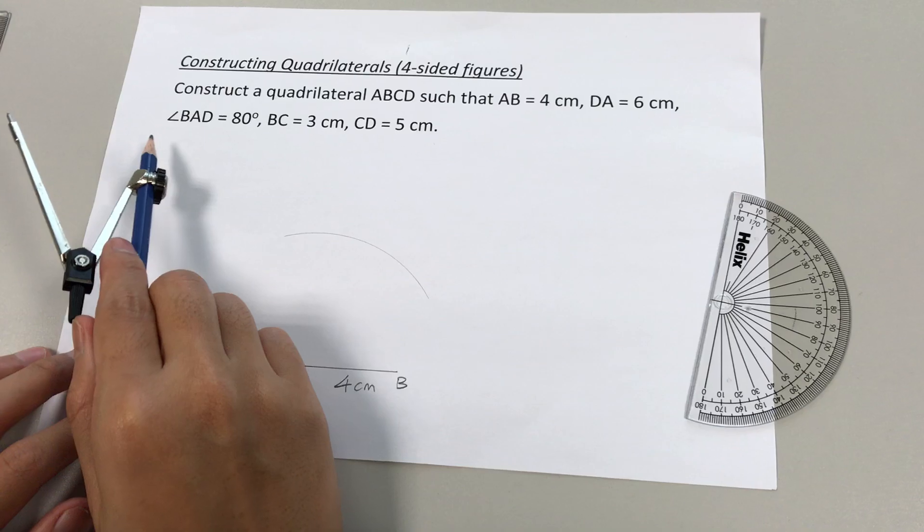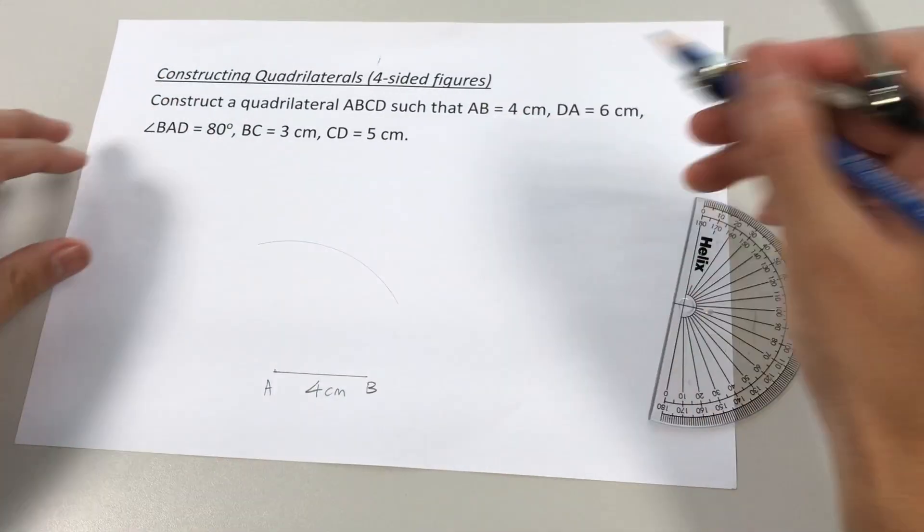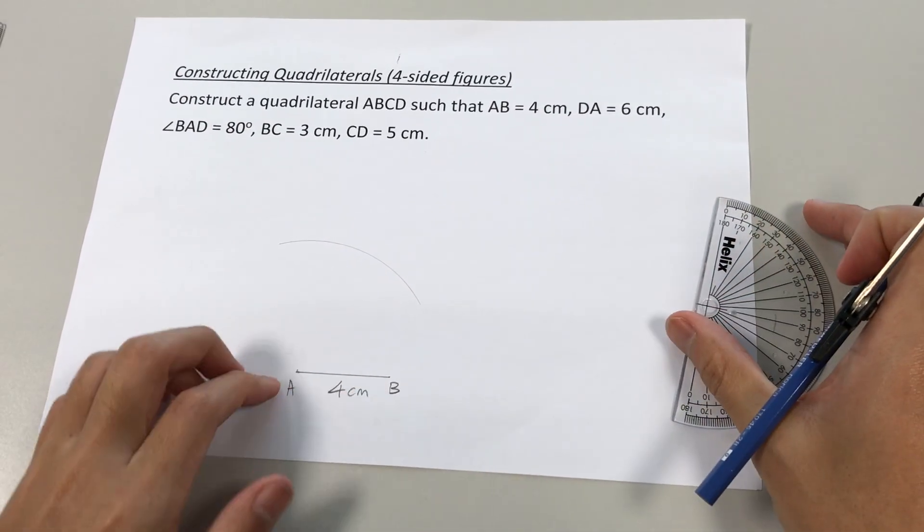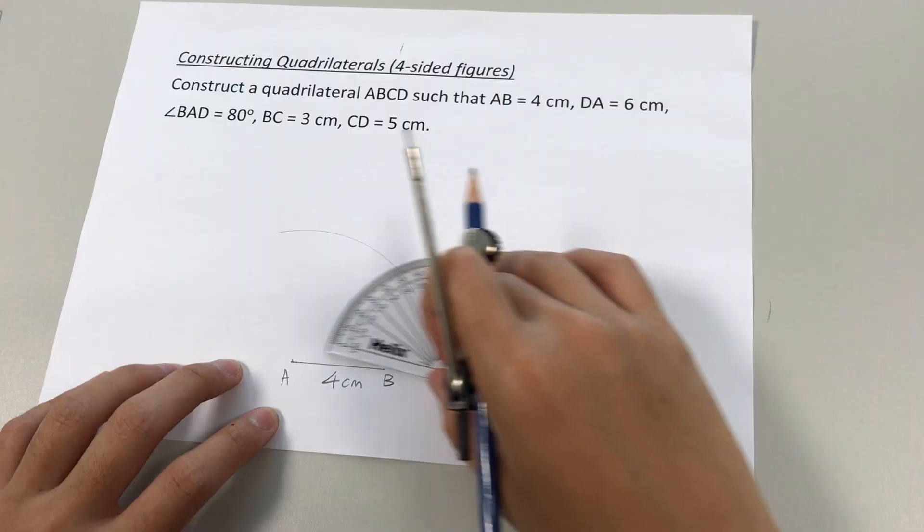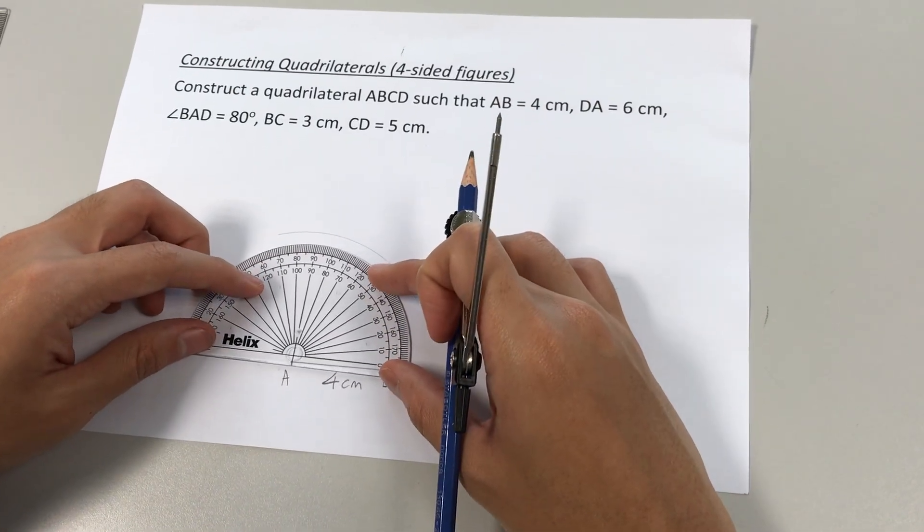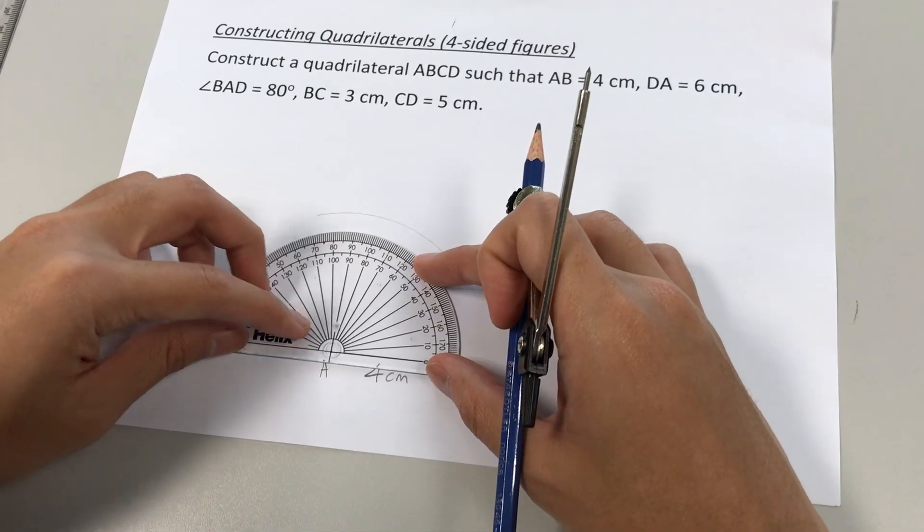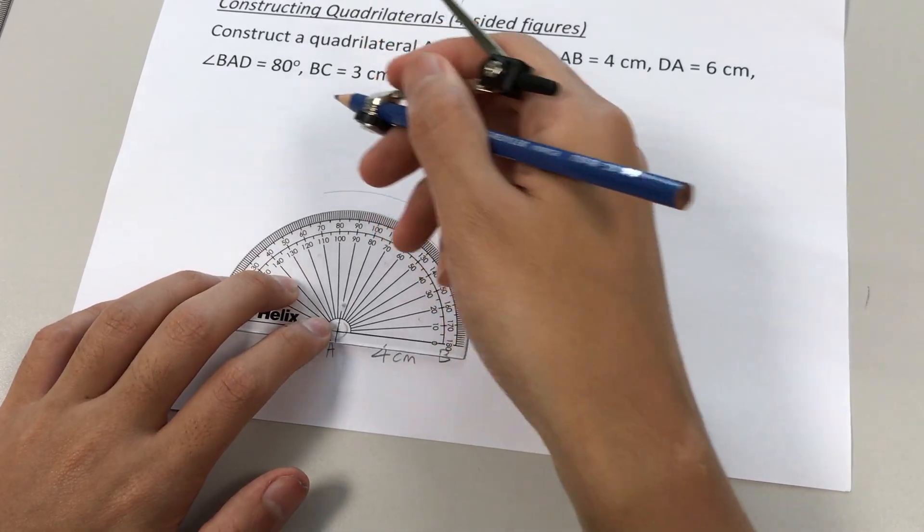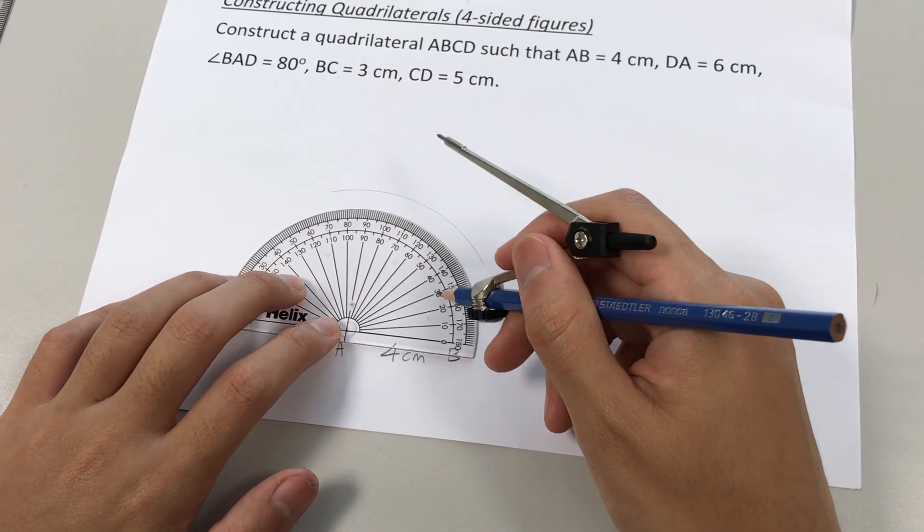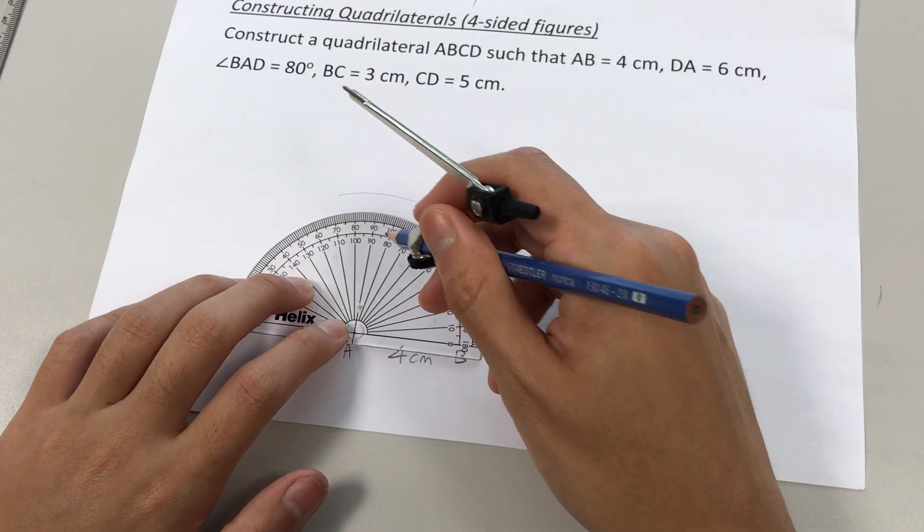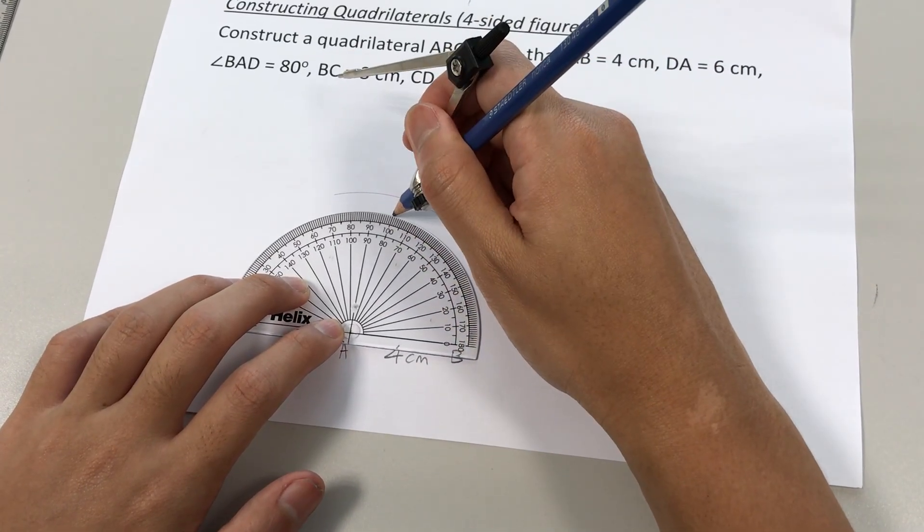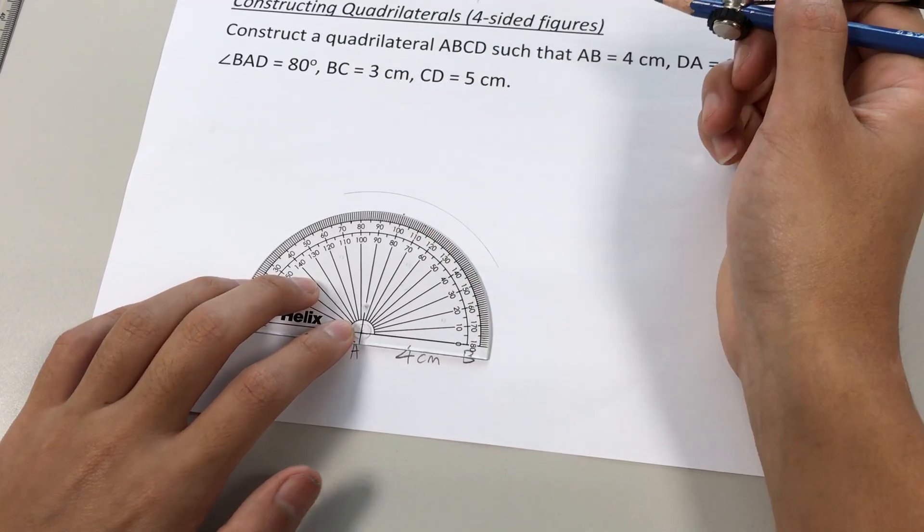The next piece of information we get is an angle. Therefore, we'll mark out angle BAD, 80 degrees. Rest the protractor on the line. Okay, mark out 80 degrees. 10, 20, 30, 40, 50, 60, 70, 80. For the marking, remove.